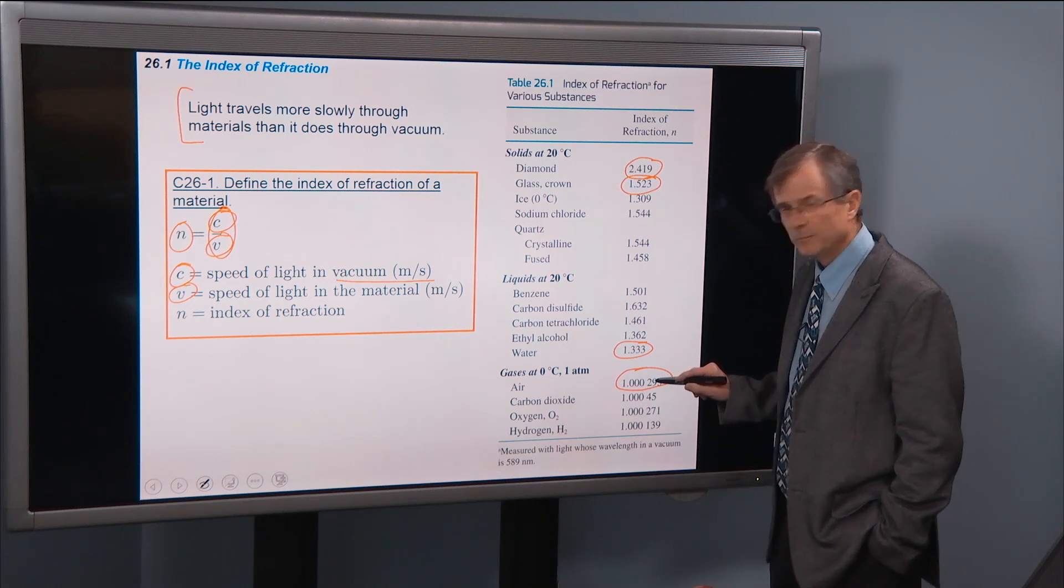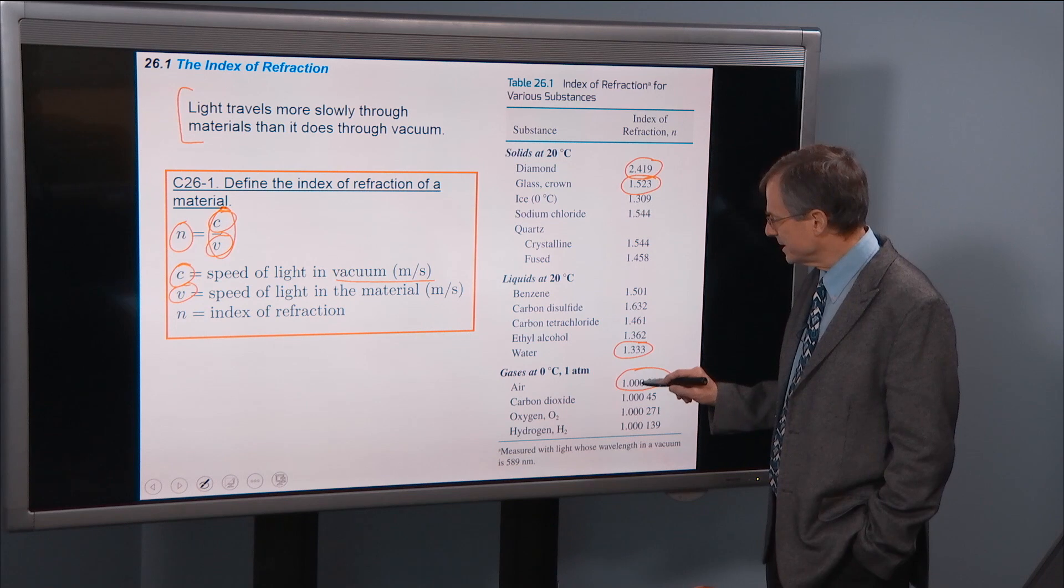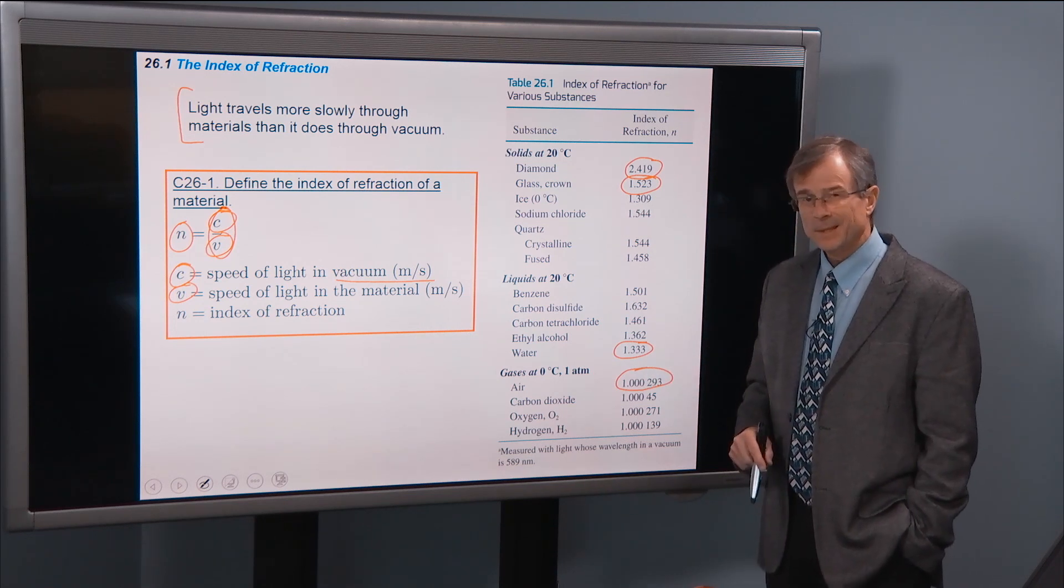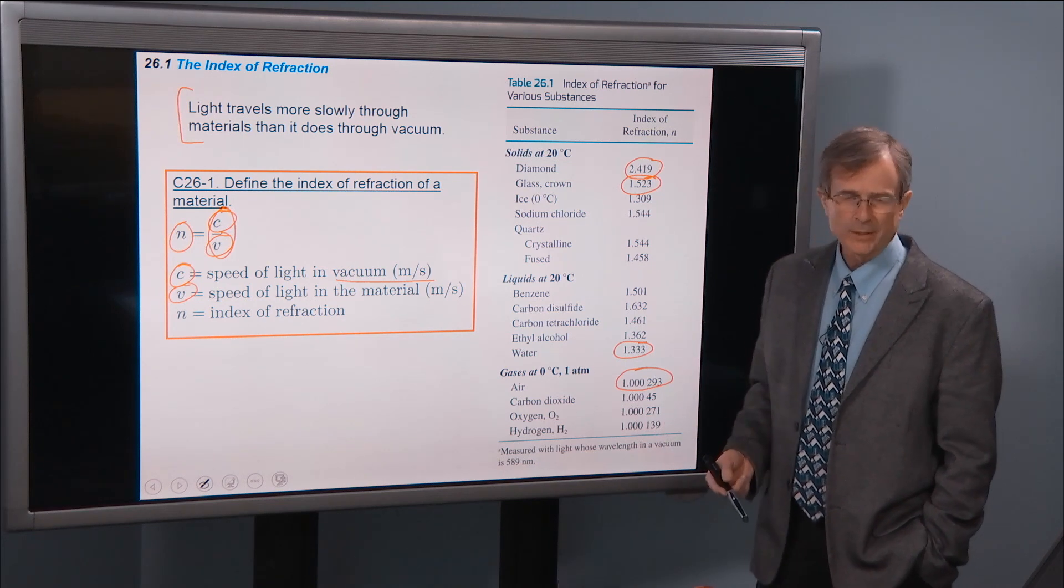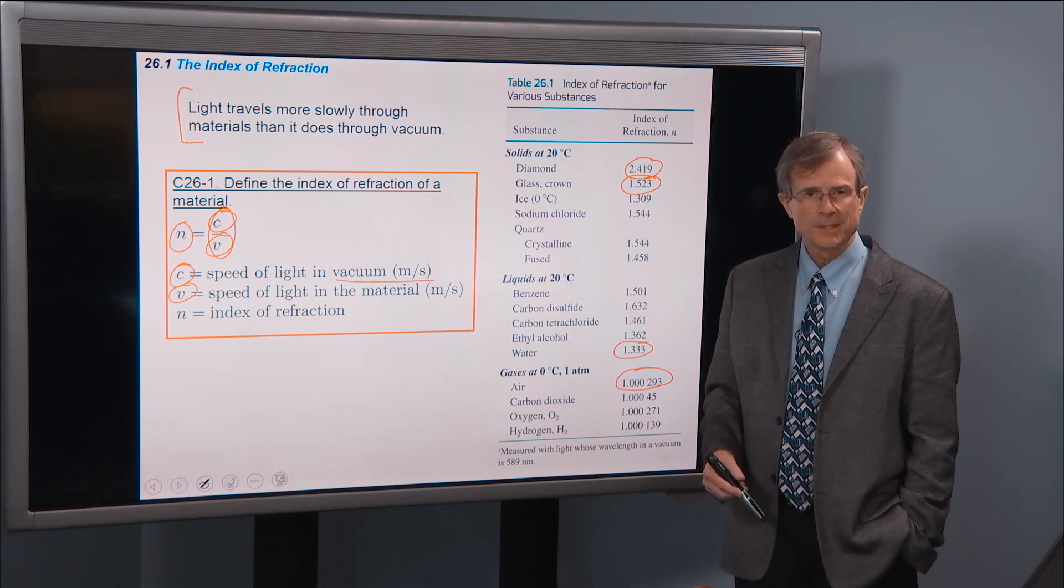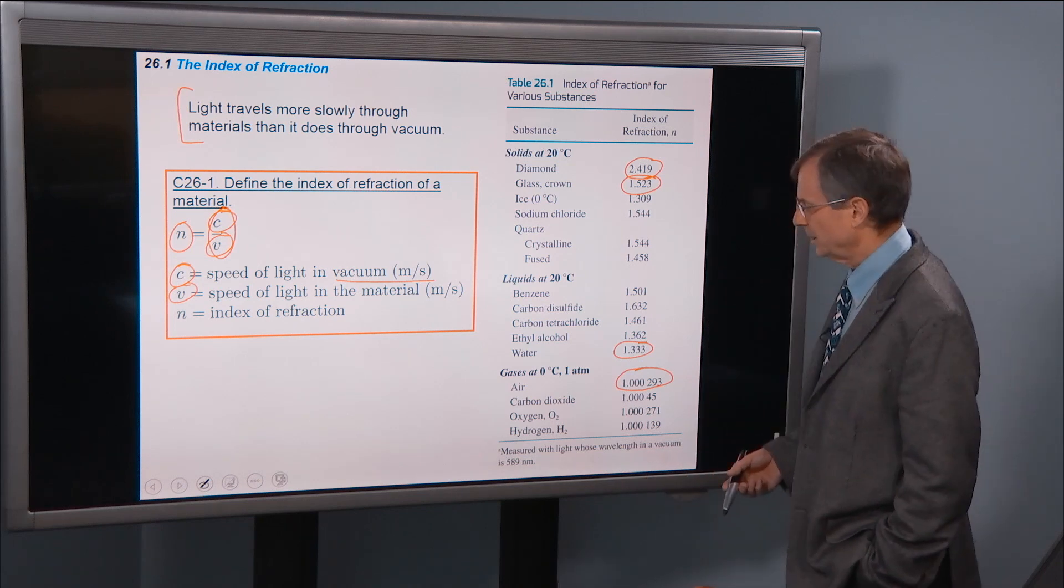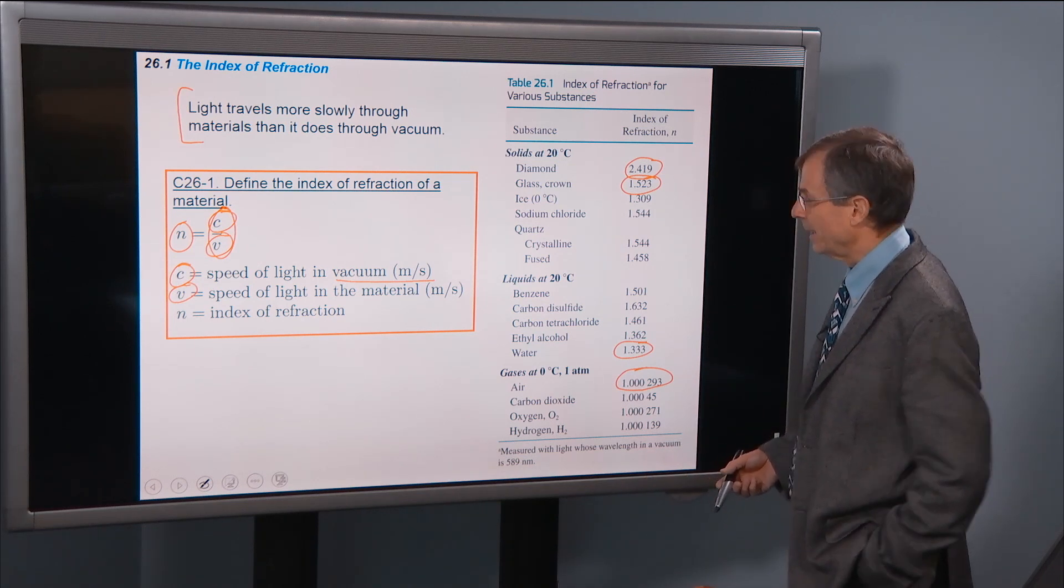Take a look at that number. This is an index of refraction of 1.000293. That's a number that's very close to 1. And so for all practical purposes, you can treat air as if it were a vacuum, as far as the propagation of the speed of light through air.